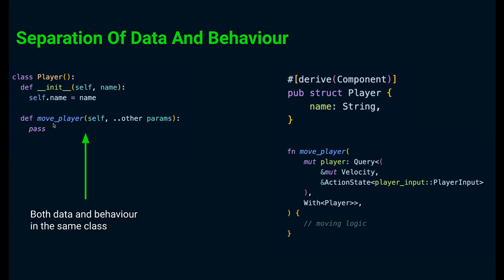So we can see that the data, that is player name, and its behavior, the movePlayer method, are tightly coupled with each other, both part of the same class.